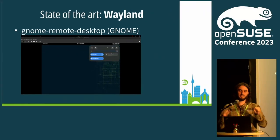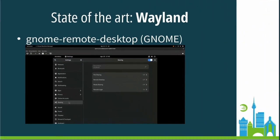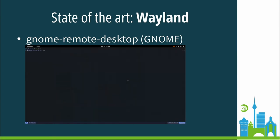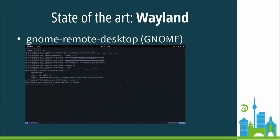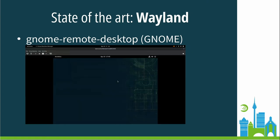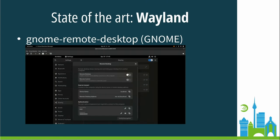GNOME Remote Desktop is also a daemon that is attached to a GNOME session and communicates with the Wayland compositor of GNOME, called Mutter, and provides remote assistance. It uses both the VNC protocol and the RDP protocol at the same time. It needs to communicate with PipeWire and Mutter through a DBus interface that Mutter exposes, called Remote Desktop and Screencast. So it needs to communicate with PipeWire and Mutter through the DBus interface.